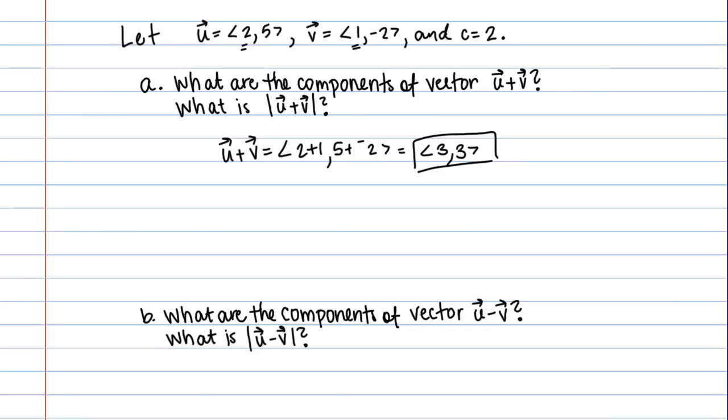This notation, remember, means the magnitude. If you see vectors in bars like that, it's asking about the magnitude of that vector. This is asking about the magnitude of the sum, U plus V. We just need to find the magnitude of this vector we just found here.